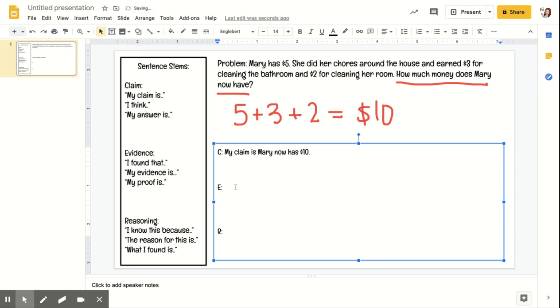We want a full sentence that is answering our question. Our evidence would be: my evidence is I added 5 plus 3 plus 2 and I got the answer 10. So your evidence is writing out what your work was.